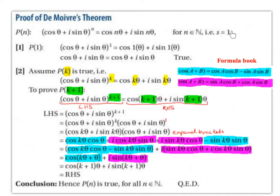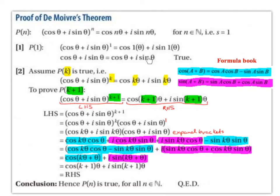Since S is the starting number, we want to work out P(1), substituting 1 in place of each of the n's. So we have: cos θ + i sin θ to the power of 1 equals cos 1·θ + i sin 1·θ. Simplifying, we get cos θ + i sin θ equals cos θ + i sin θ, which is true. So we have shown this is true for the starting number S = 1.